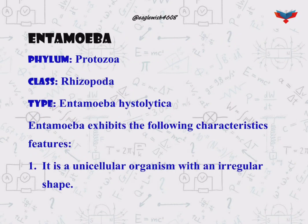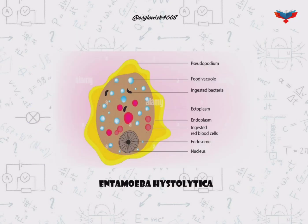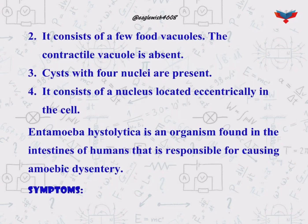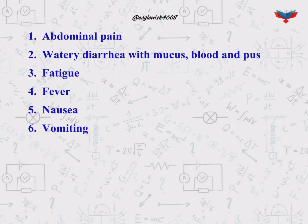Amoeba is a member of phylum Protozoa and class Rhizopoda, which causes the disease amoebic dysentery. The diagram here shows the Entamoeba histolytica. The symptoms of amoebic dysentery are abdominal pain, watery diarrhea with mucus, blood and pus, fatigue, fever, nausea, and vomiting.